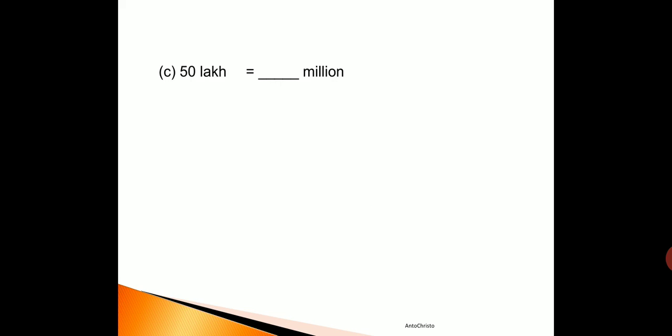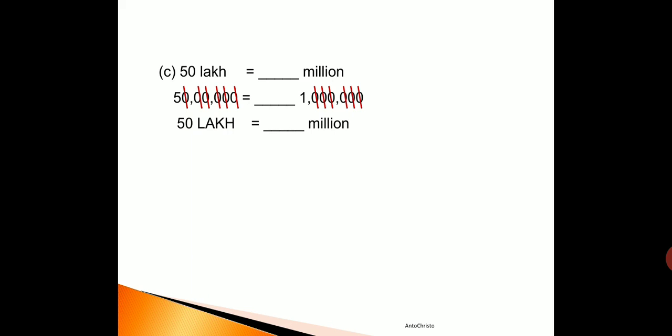Now the C question: 50 lakh is equal to dash million. We write it in numbers: 50 lakh equals dash one million. Now we start striking the zeros from the right corner — first zero each side, second, third, fourth, fifth, sixth zero each side. Now what is left? Only five is left. So 50 lakh is equal to five million. Since five is left all alone, we write five million.